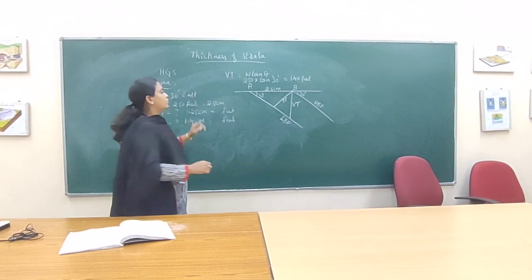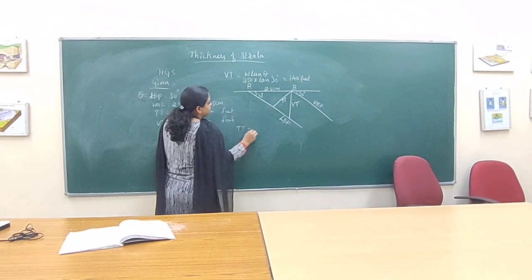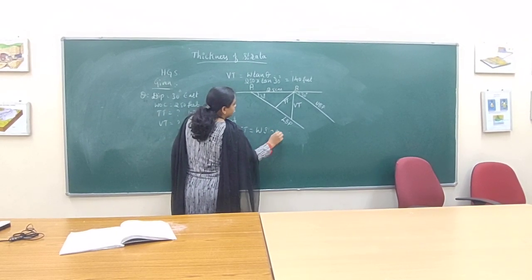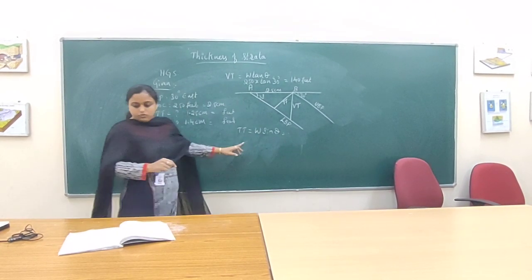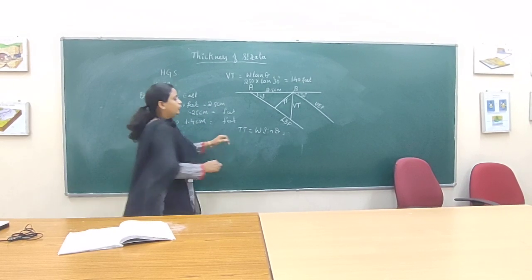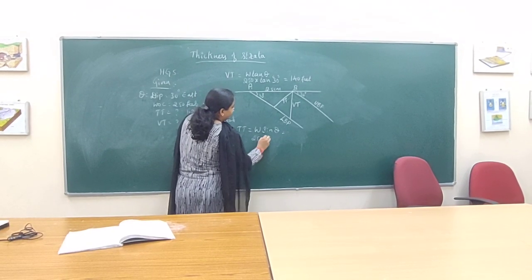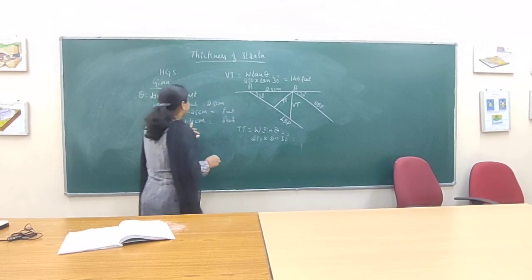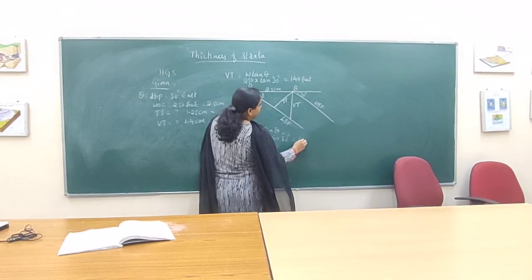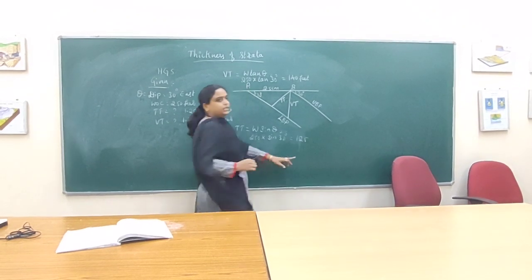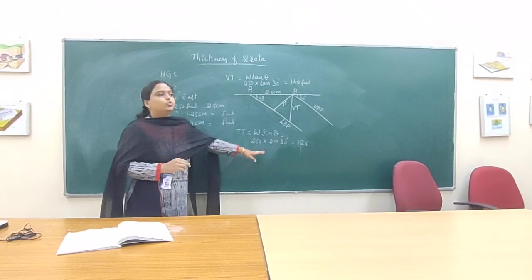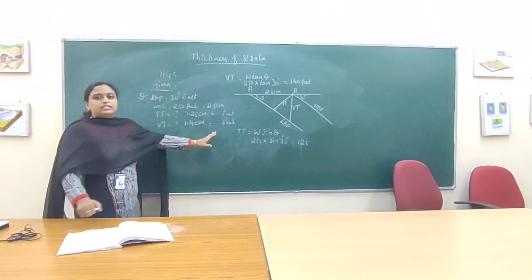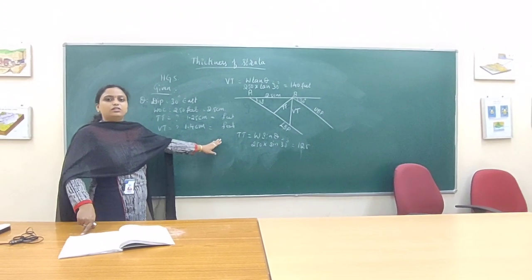For true thickness, another formula: true thickness = W·sin(θ). Here W = 250, into sin(30°), so you get the answer of approximately 125 feet. Through this you can cross-check your answer — whether the geometrical result is right or wrong.